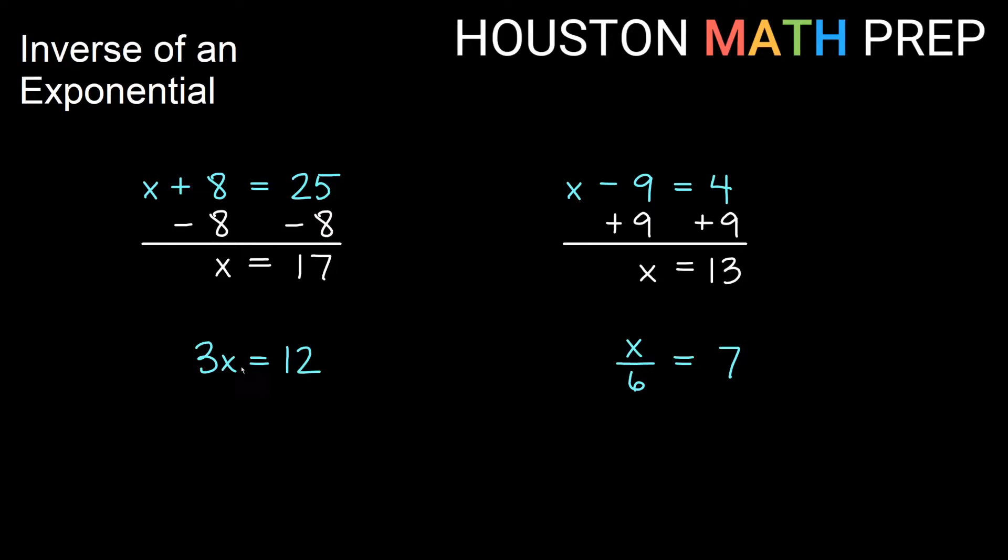When we have multiplication, this is really x times the number 3 equals 12. So the opposite of multiply by 3 is divide by 3. So that's what we do to both sides. We divide by 3, and that gives us that x is 12 divided by 3, also known as x equals 4.